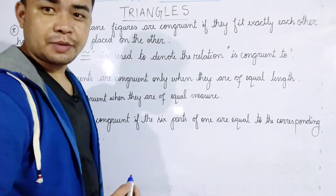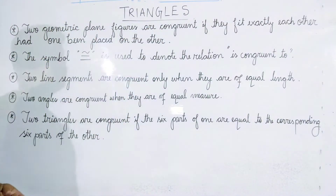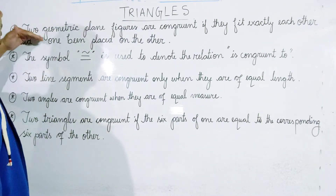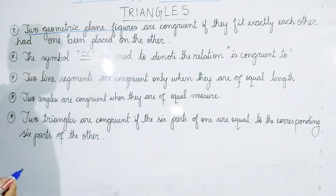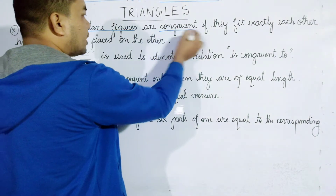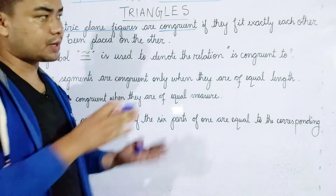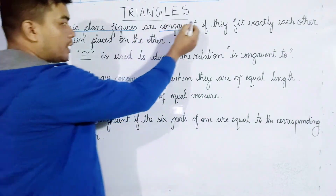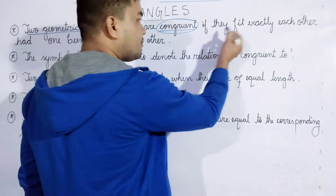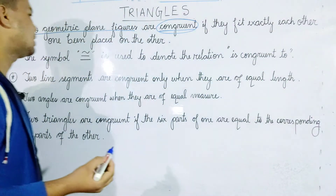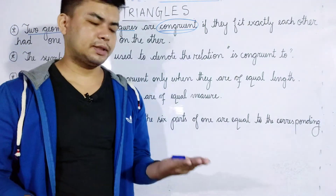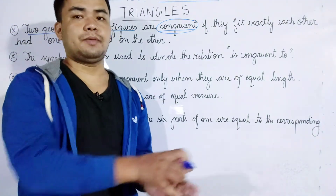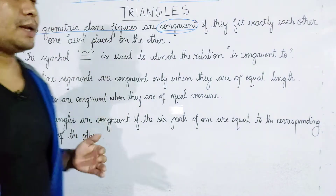Two geometric plane figures are congruent if they are exactly the same — that is, if one can be placed on the other and they fit exactly.